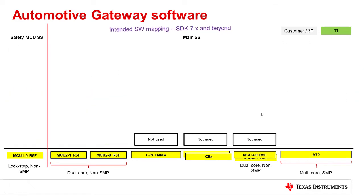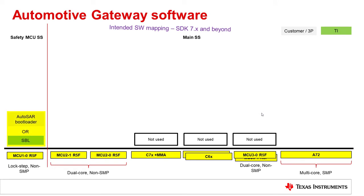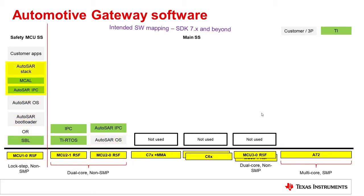We will now switch to the intended software mapping view. This represents a more complete and optimized mapping for the gateway application. In this case, execution starts with the AutoSAR or SBL bootloader, which in turn bootstraps the rest of the cores in the system. The R5F cores in the MCU domain and the MCU2_0 R5F instance in the main domain are initialized and can potentially run AutoSAR OS while Linux is bootstrapped on the A72 cores. In the MCU domain, AutoSAR IPC and MCAL components allow for integration with the AutoSAR stack. The CAN-Ethernet bridging application is now migrated to run from the main domain R5F, leaving the MCU domain R5F completely free for integration of customer applications.